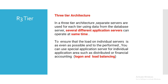In three-tier architecture, separate servers are used for each tier. Using data from the database server, several different application servers can operate at the same time to ensure the load on individual servers is as even as possible. You can also use a special application server per individual application area, such as distributed financial accounting with logon and load balancing.